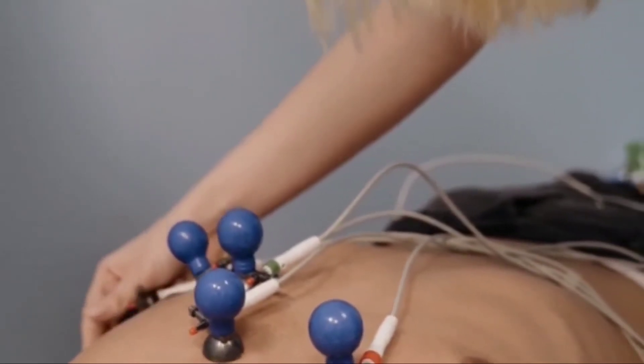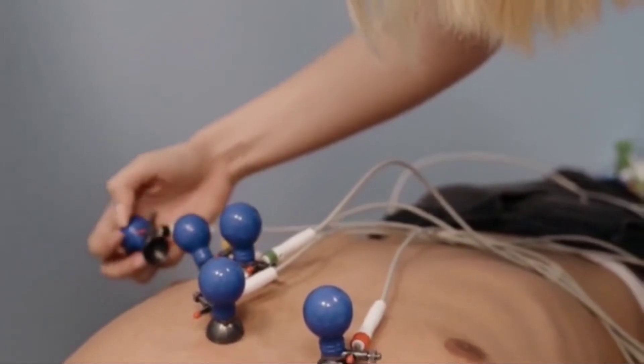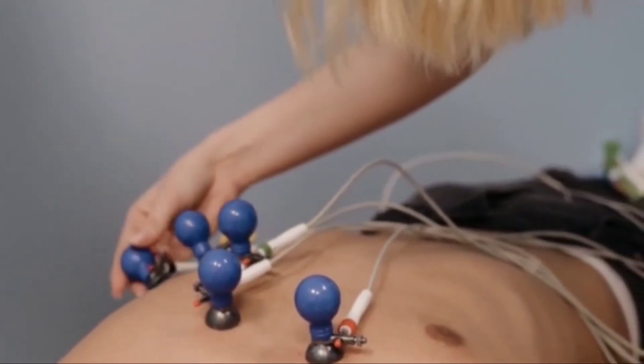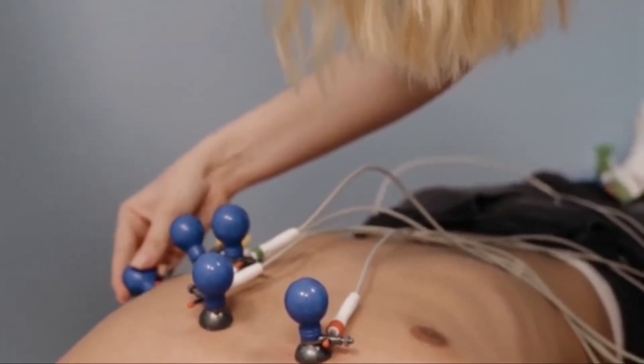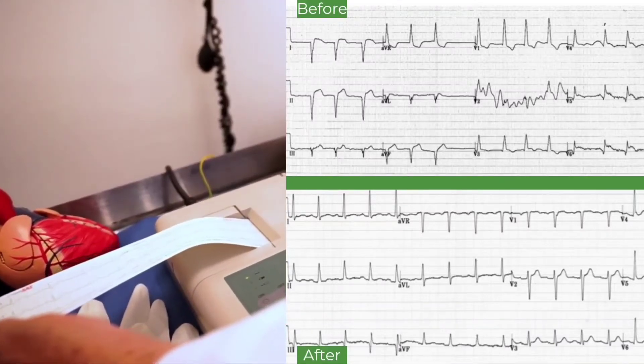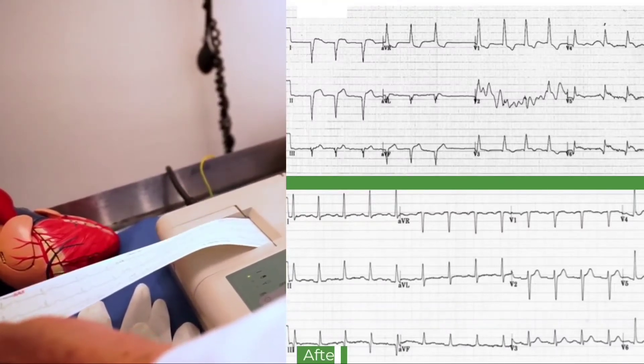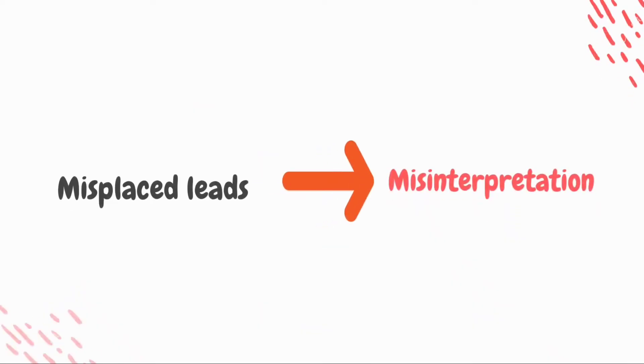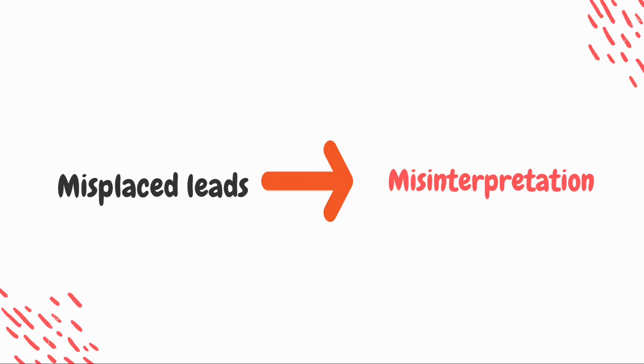The cardiologist determined the ECG was misrecorded, either due to misplaced leads or a malfunctioning machine, and advised repeating the ECG with a different machine. The results were different — within normal limits. This scenario not only saved the patient from unnecessary thrombolysis but also from its complications. Misplaced leads can lead to errors in diagnosis, which can be easily avoided by learning to recognize them.